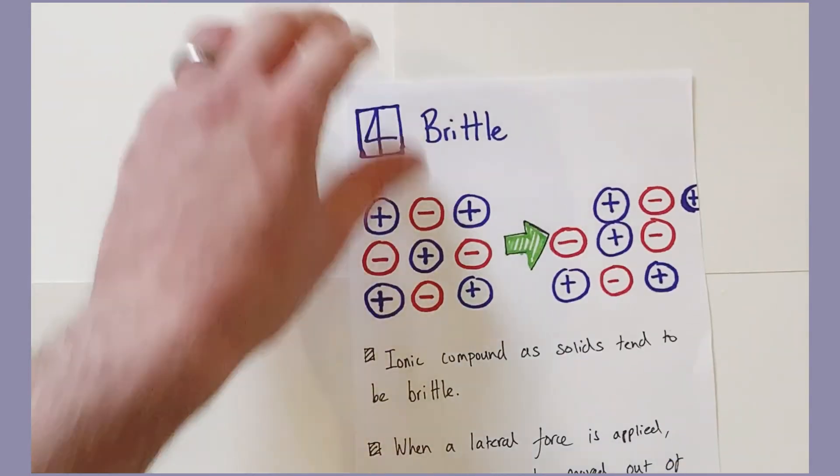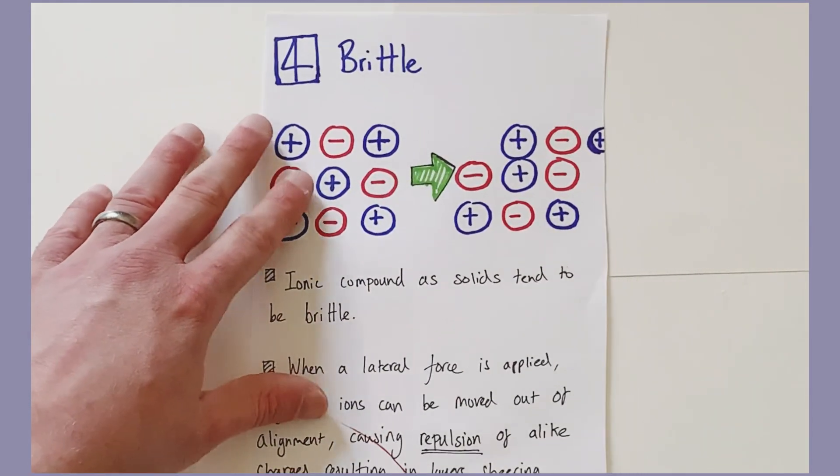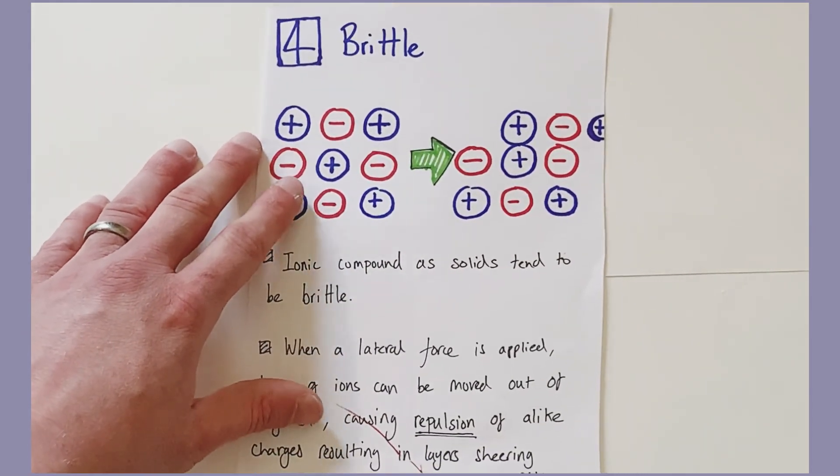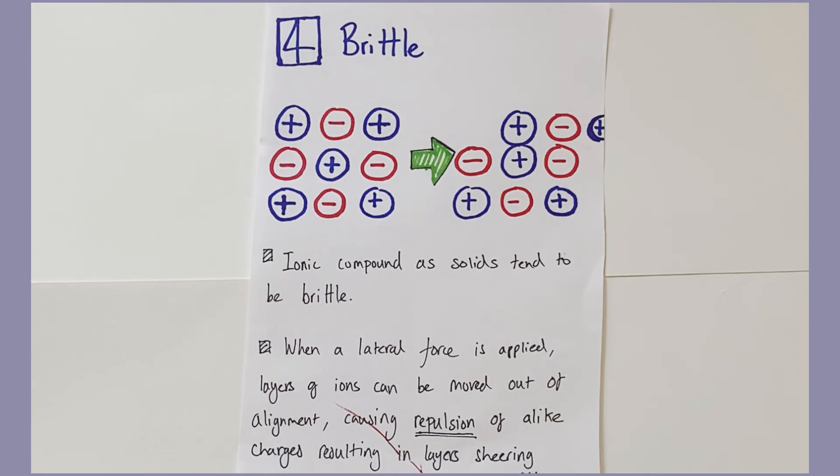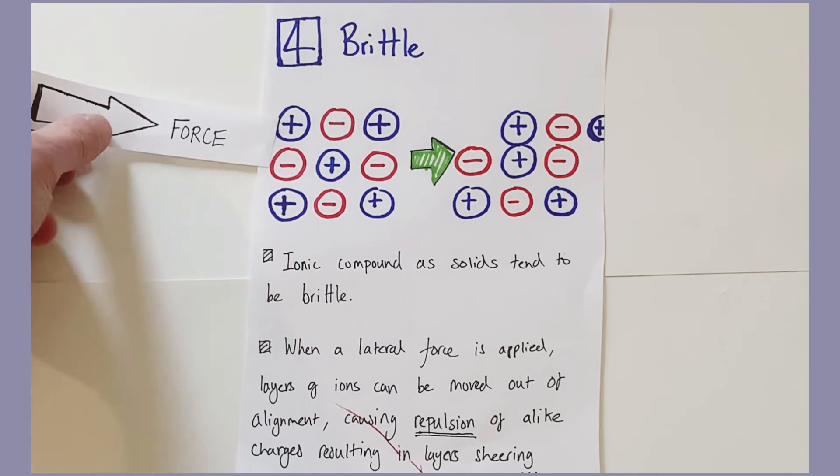Now, the final property I want to talk about for giant ionic structures is their brittleness. They are crystalline structures. And when large forces are applied to them, they will shatter and crack and break. So imagine I applied a force, a lateral force to this crystalline structure here.